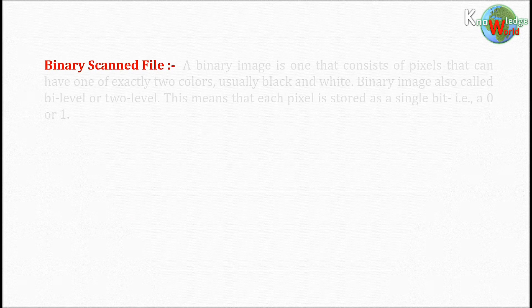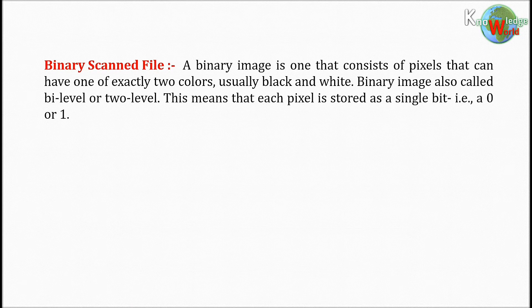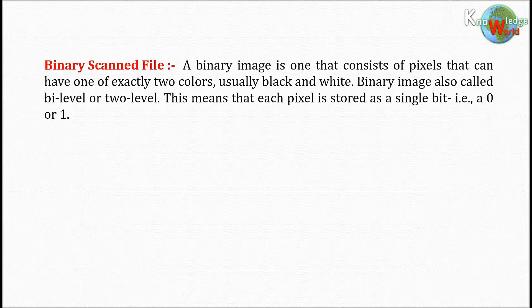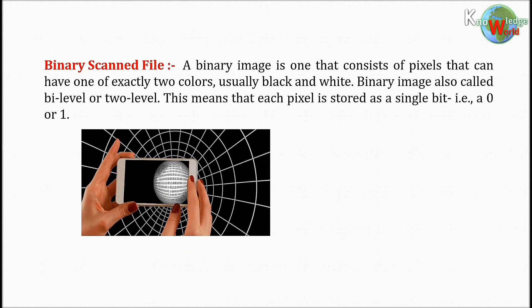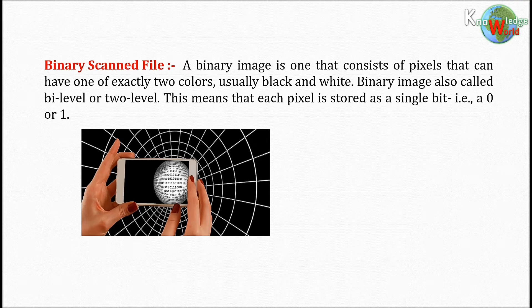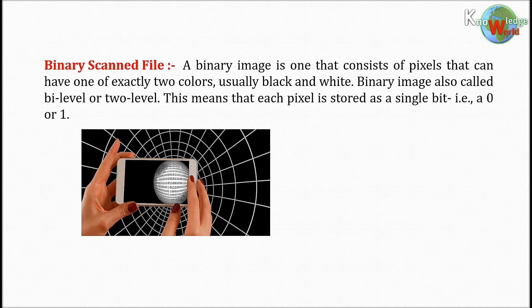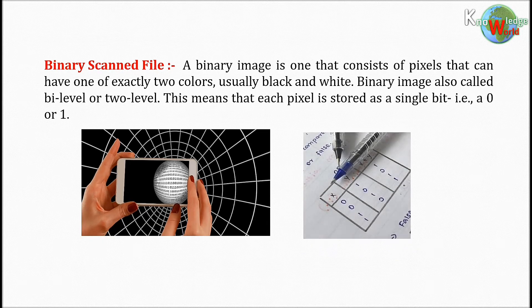Binary scanned file: A binary image is one that consists of pixels that can have one of exactly two colors, usually black and white. Binary image also called bi-level or two-level. This means that each pixel is stored as a single bit, for example, a zero or one.